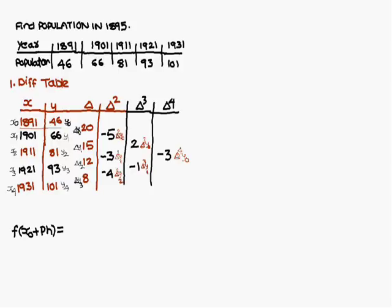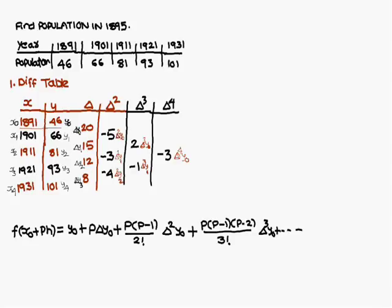The Newton forward interpolation formula is: f(x0 + ph) = y0 + p·delta y0 + [p(p−1)/2!]·delta² y0 + [p(p−1)(p−2)/3!]·delta³ y0, and so on. The pattern for the p terms is: p to the power 0, then p, then p(p−1), then p(p−1)(p−2), then p(p−1)(p−2)(p−3). The corresponding difference values used are y0, delta y0, delta² y0, delta³ y0, and so forth.